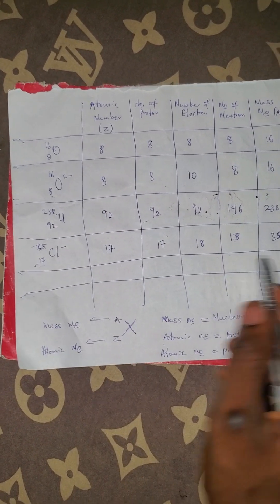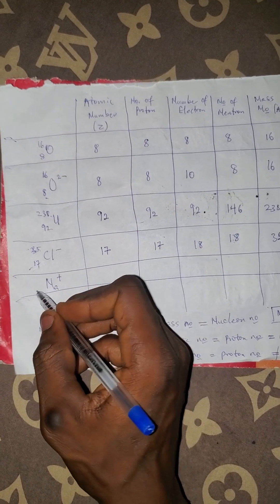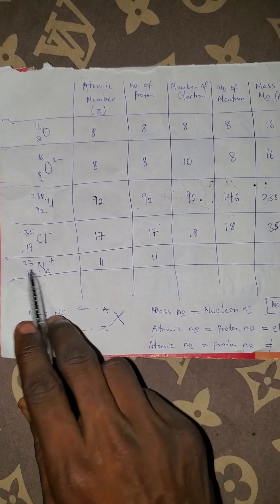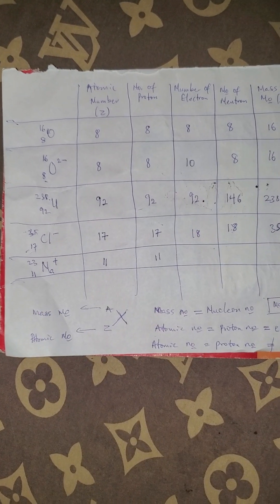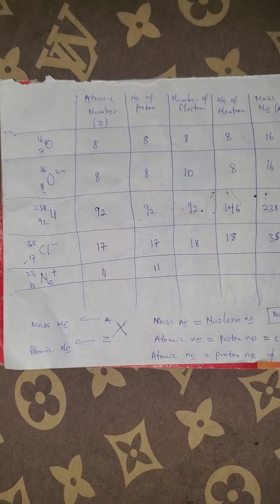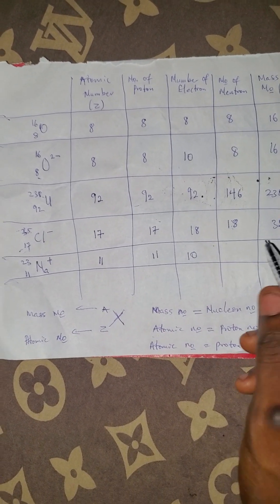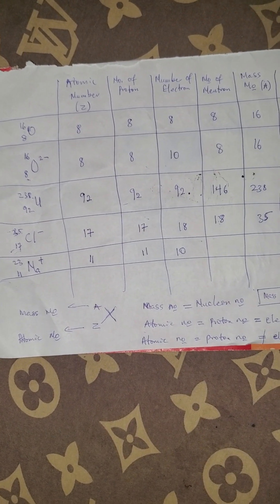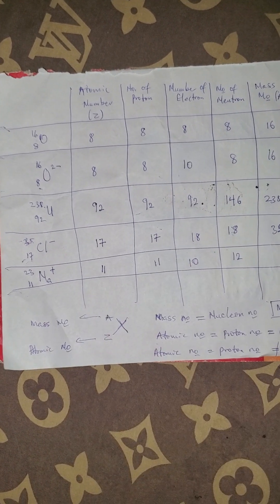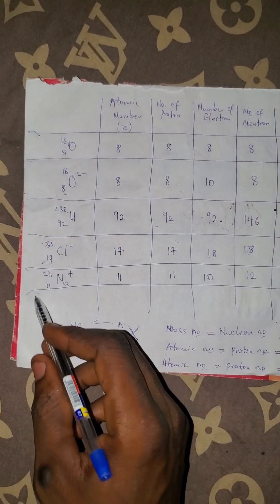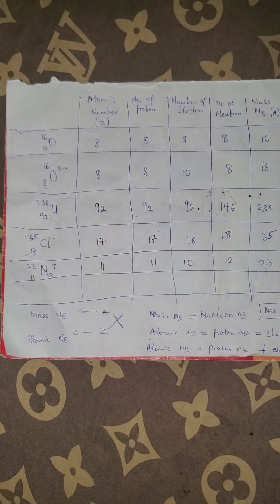The mass number is 35 and the nuclear number is also 35 because they are the same thing as mass number. Lastly, let's talk about sodium with a 1-plus charge: Na-23, with atomic number 11. The atomic number is 11 and the proton number is also 11. The electron number will not be 11 because plus means loss in chemistry — this atom is going to lose one electron, so the electron number is 10. The neutron number is 23 minus 11, which is 12. The mass number and nuclear number are both 23.